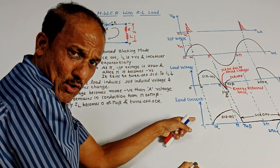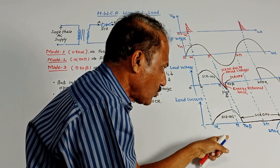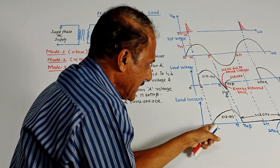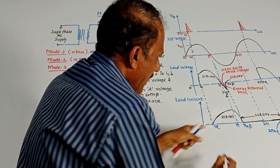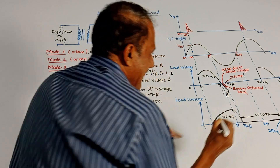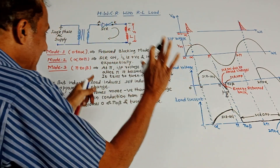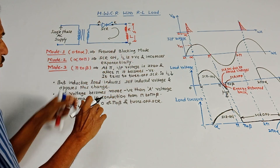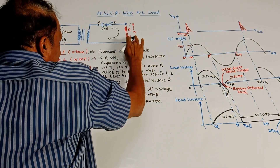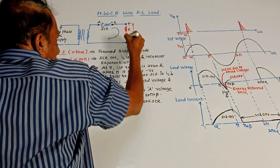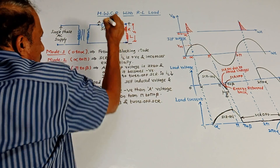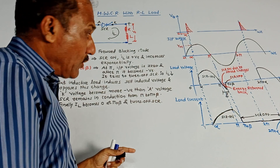The fourth waveform is the graph of load current versus omega t. Load current will start increasing from alpha, just like the load voltage. It will start exponentially increasing up to pi. Between zero to pi you get the waveform in conduction — SCR is on, load current IL is positive. Since load current is positive, the inductor polarity will be plus-minus initially because current is flowing through it in that direction.